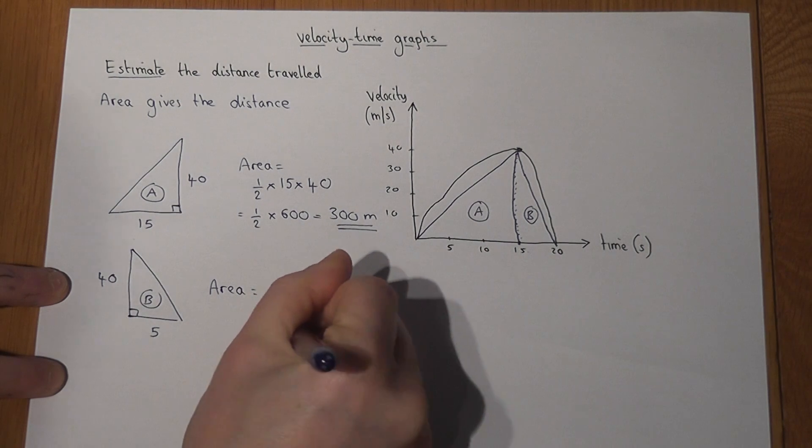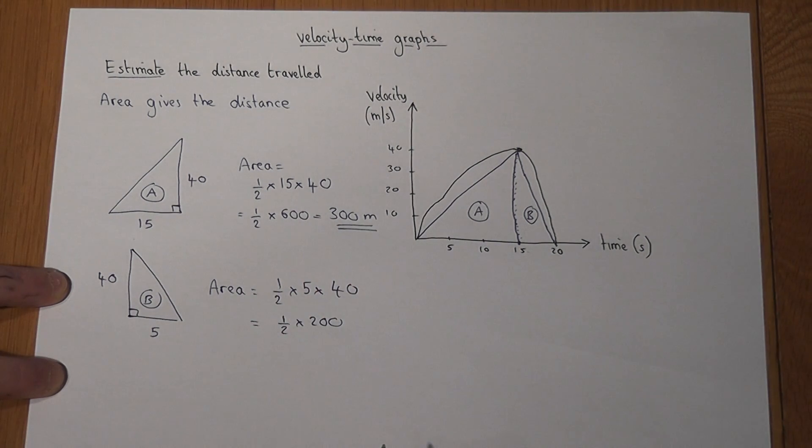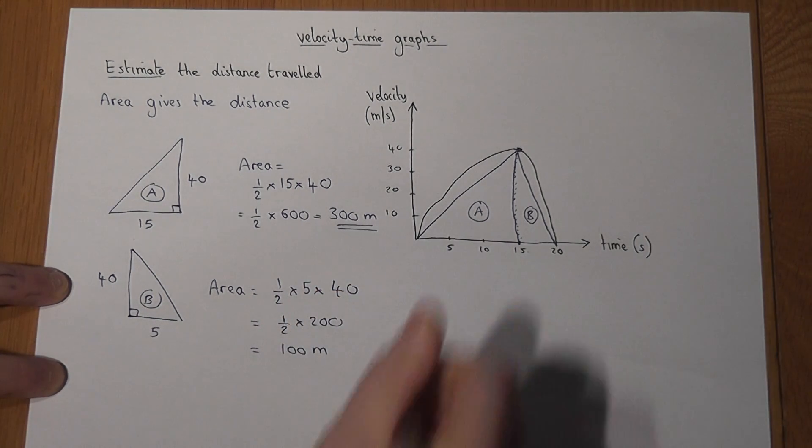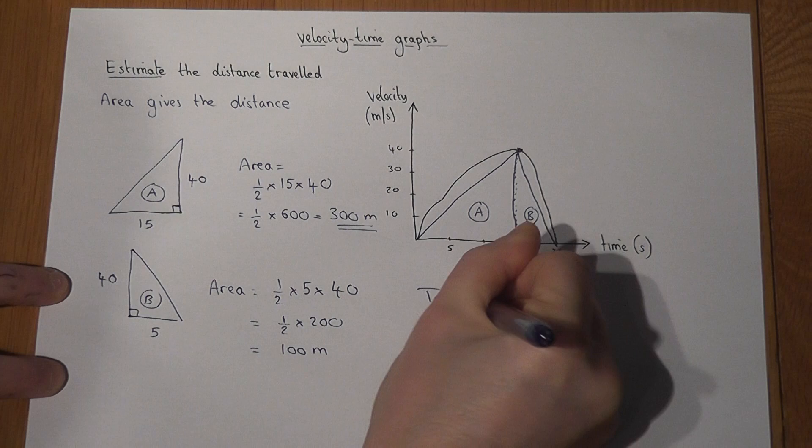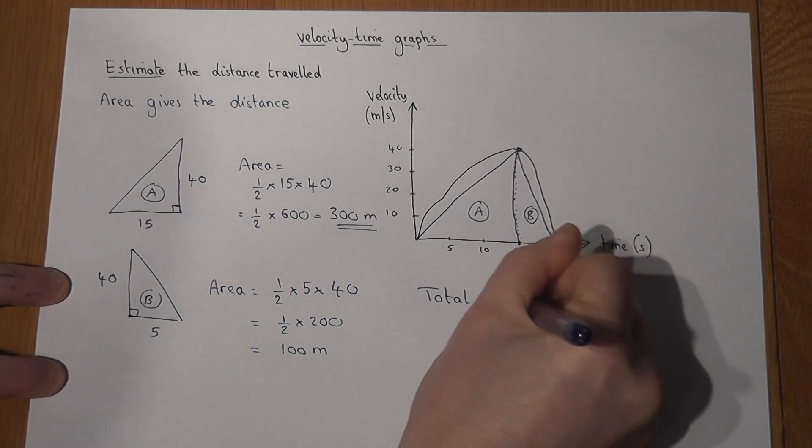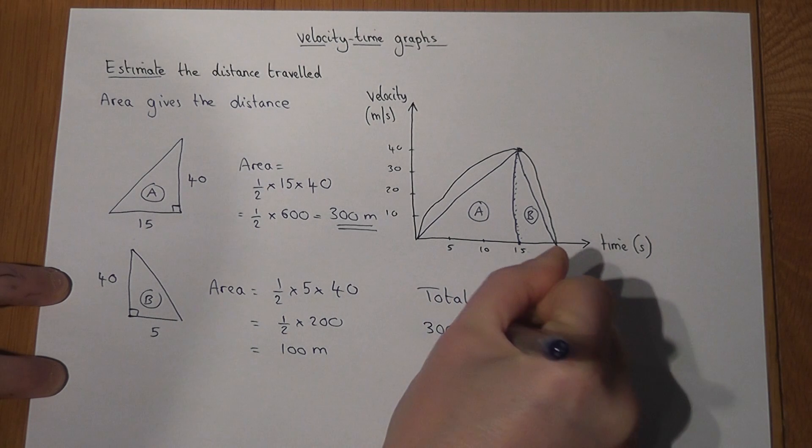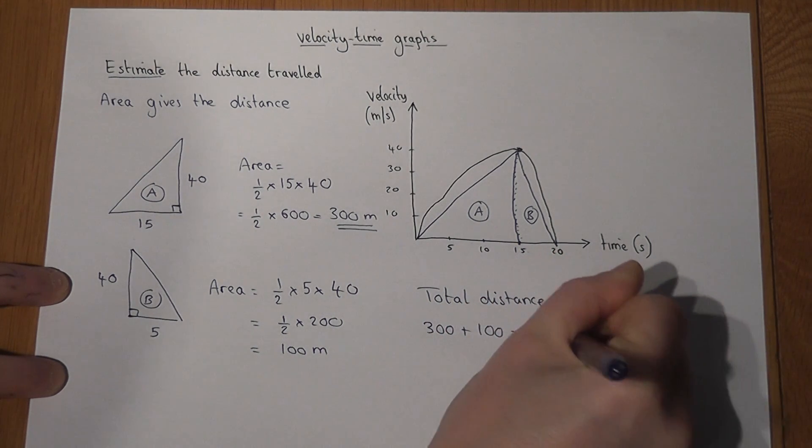5 times 40 is 200, so a half of 200 is just 100 metres. So the total distance works out to be 300 plus 100, which is 400 metres.